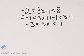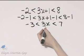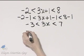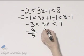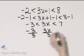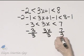And I'll finish solving by dividing all three parts, or all three sides, by the coefficient of x, which is 3. The left side, I'll divide by 3. The middle, I'll divide by 3. And the right, I'll divide by 3.